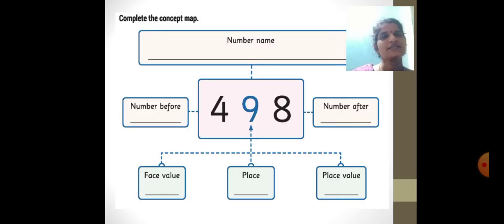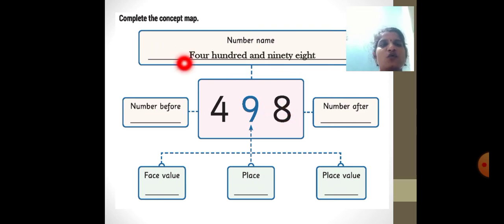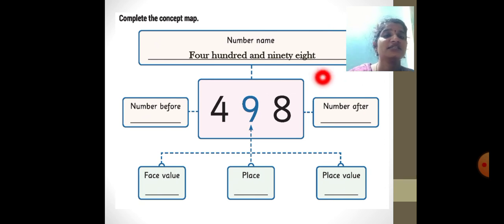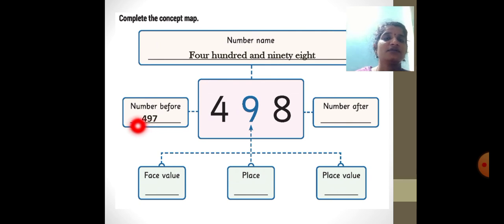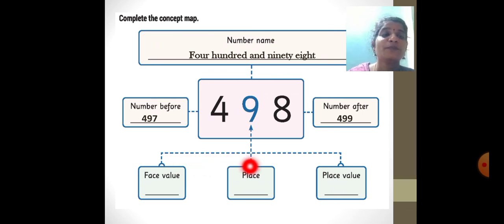Now it's time to answer the concept map. The number is 498. Write the number name for 498: four hundred and ninety-eight. For 498, write the before and after numbers: the number before is 497, the number after is 499. Now find the place value, face value, place, and place value for the highlighted digit.